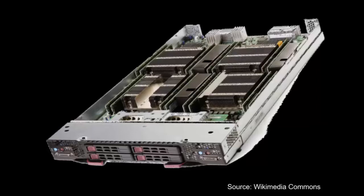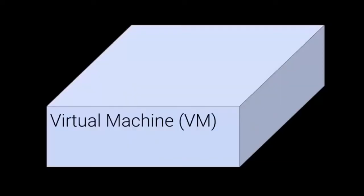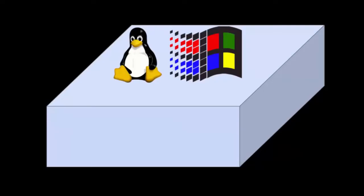What cloud providers typically do is they install a special type of operating system on those servers. An example of such an operating system is a Xen hypervisor. Such a hypervisor makes the underlying hardware look like a single virtual machine or VM. You can then install any type of operating system you desire on that virtual machine, for example Linux, Windows, or whatever you like.